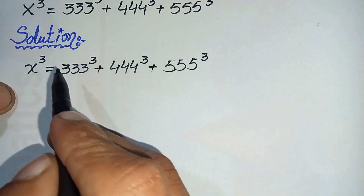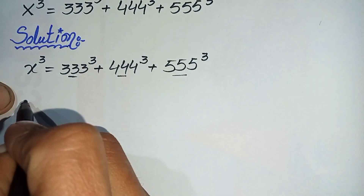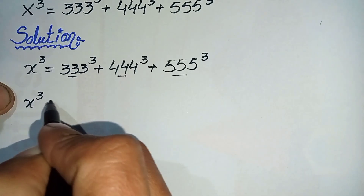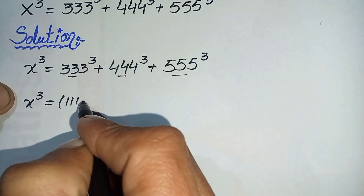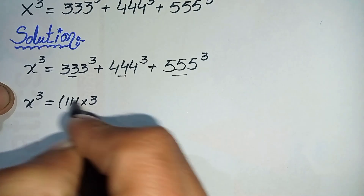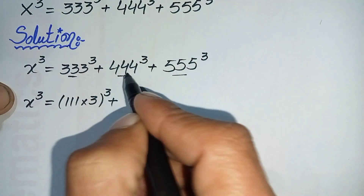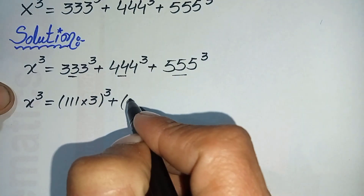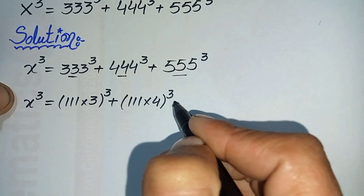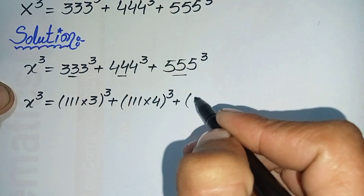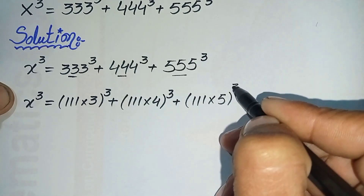To solve this question, first we will factorize all three bases. We can write 333 as 111 times 3, 444 as 111 times 4, and 555 as 111 times 5 — each raised to power 3. So x cubed equals (111×3)³ + (111×4)³ + (111×5)³.